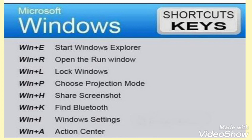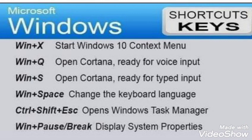Windows + K: find and connect to Bluetooth devices. Windows + I: open Windows Settings. Windows + A: open Action Center. Windows + X: open the Windows 10 context menu.